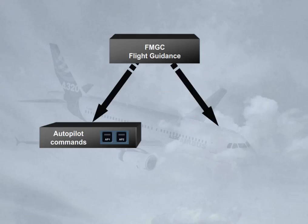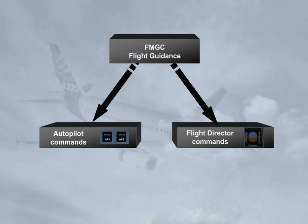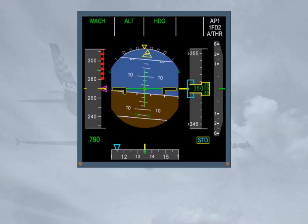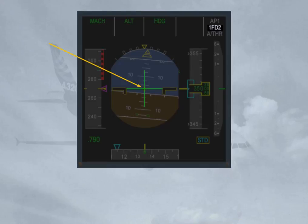The flight guidance system also drives the flight director, FD, symbols displayed on either PFD. The flight director is an assistance provided to the pilots to accurately hand-fly the aircraft along a given segment of a trajectory. The flight director provides guidance orders to the pilots as a function of the guidance modes and targets selected on the FCU. These orders are materialised by specific symbols, e.g. crossbars. The flight director symbols are displayed on either PFD: the symbols on PFD-1 are driven by FG-1, and those on PFD-2 are driven by FG-2.